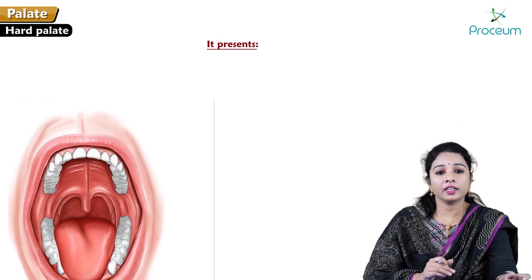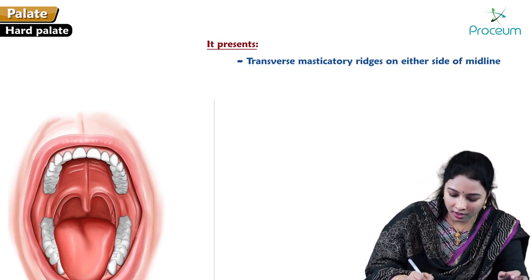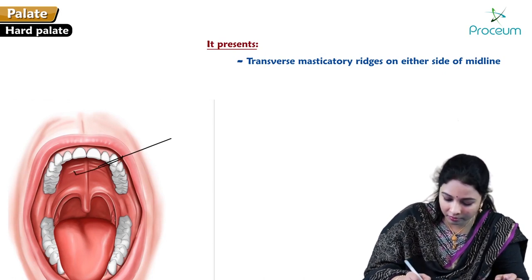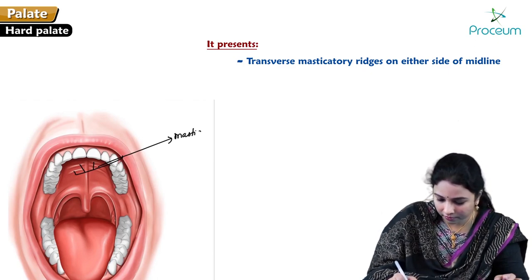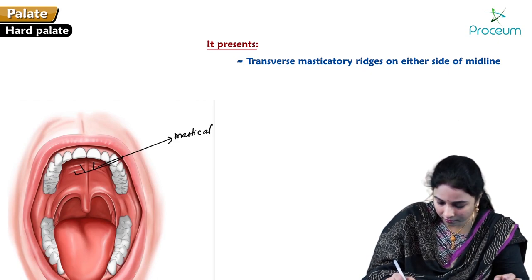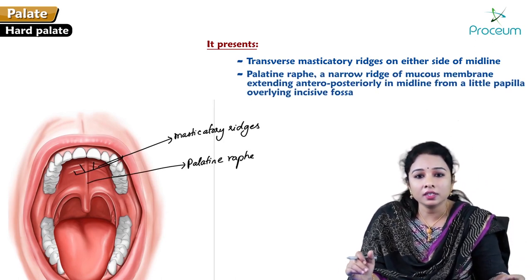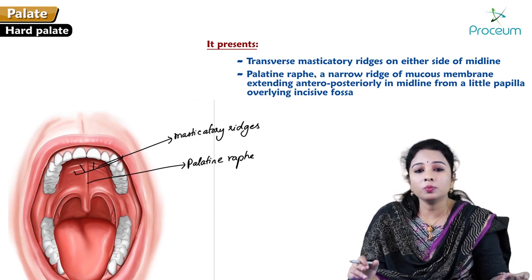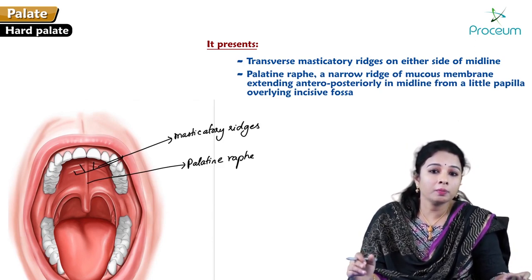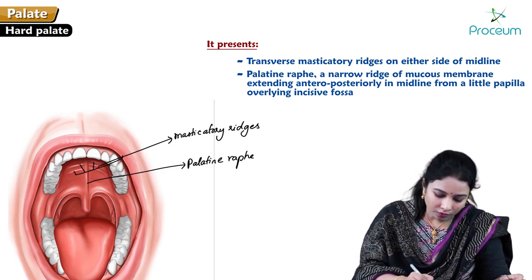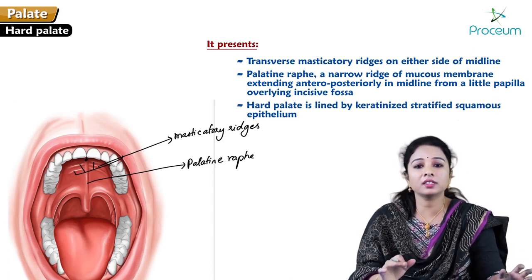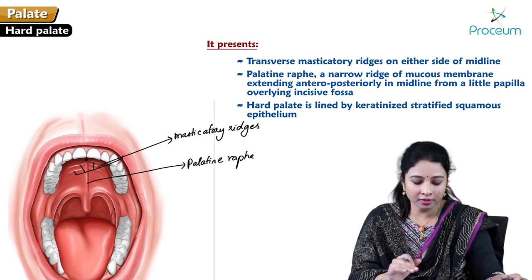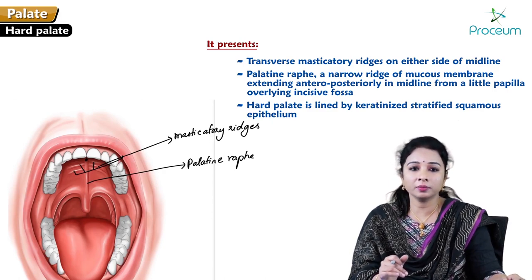The hard palate exhibits transverse masticatory ridges present on either side of the midline. The palatine raphe is a narrow ridge of mucous membrane extending anteroposteriorly in the midline from a small papilla overlying the incisive fossa. The entire hard palate is lined by stratified squamous non-keratinized epithelium.